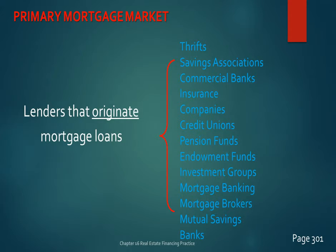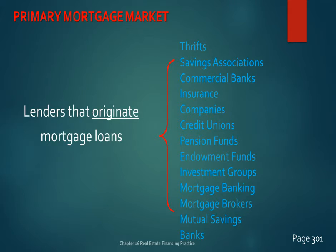You can go to savings associations and commercial banks, though commercial banks primarily lend to better customers whose businesses also bank there. Insurance companies allow you to borrow against your policy. Credit unions are becoming an increasingly popular place to borrow money at very competitive interest rates, with very low fees — if you belong to a credit union, you can go there and borrow money to buy a home.